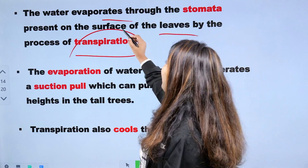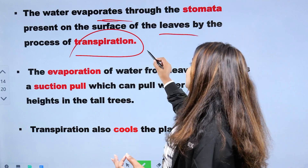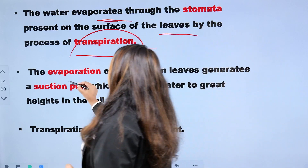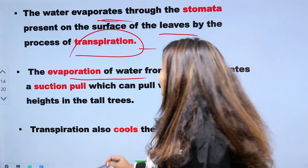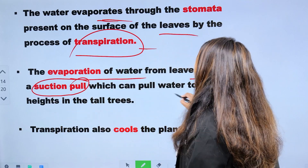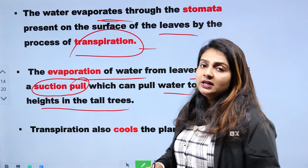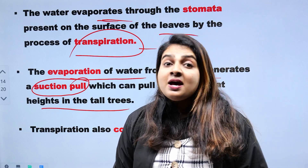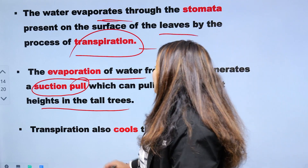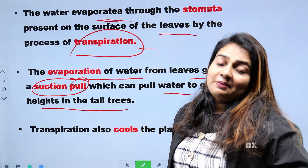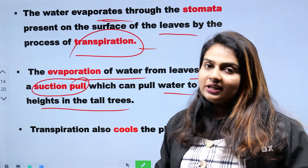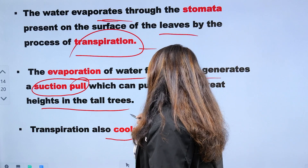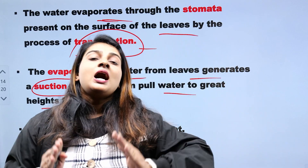We evaporate through the process of transpiration. Evaporation is one function. The section from the bottom of the surface — the other side of the surface — is equal to the plants. Transpiration helps drive the upward movement of water in plants.